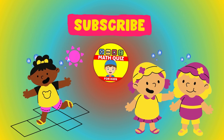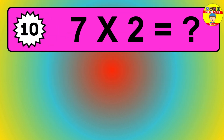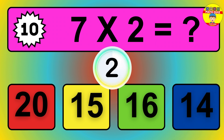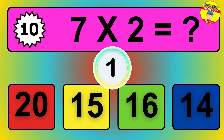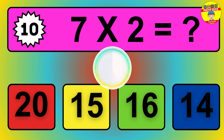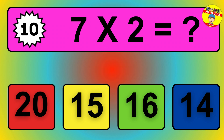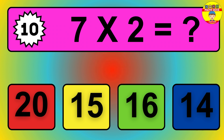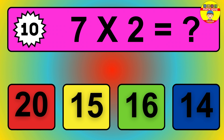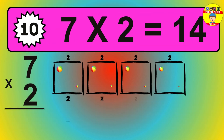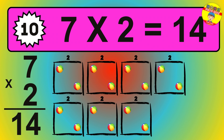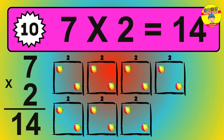Question 12. 9 times 2 equals what? The answer is 9 times 2 is 18. To calculate, we have 9 groups with 2 balls each one. So, how many balls do we have? 18 balls.